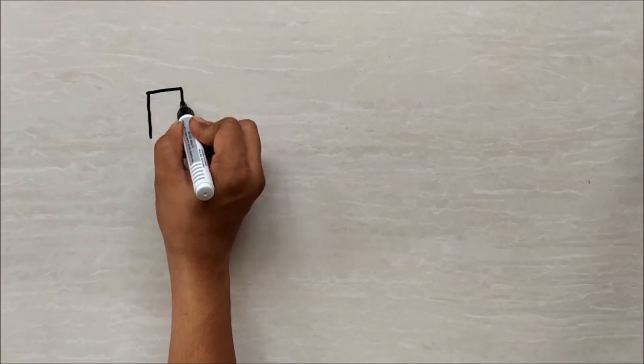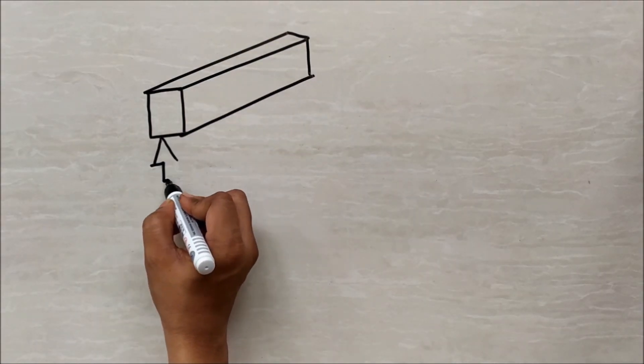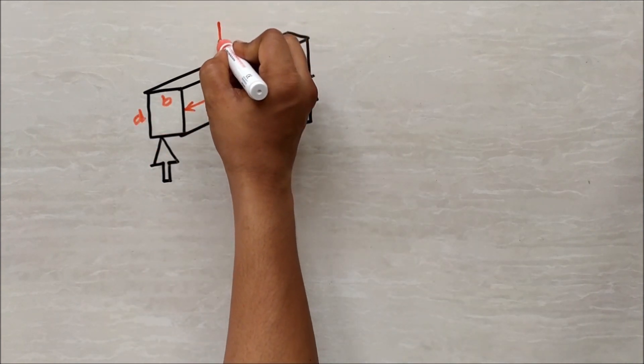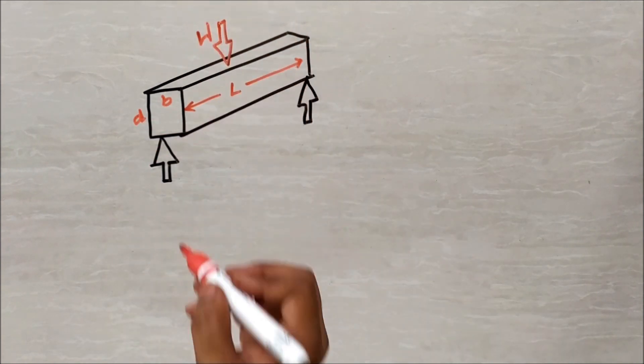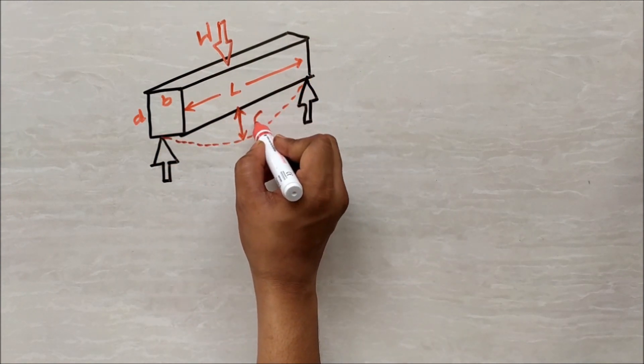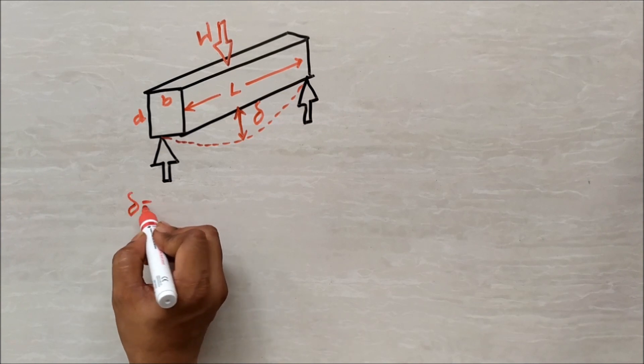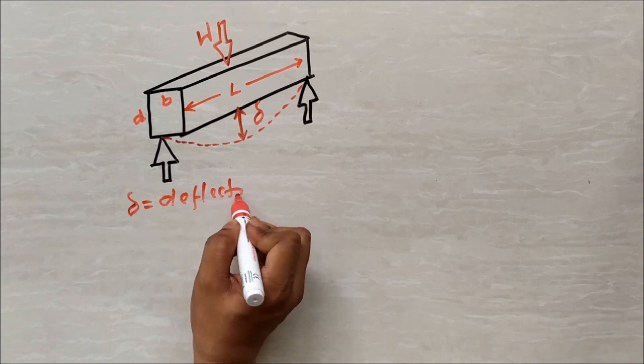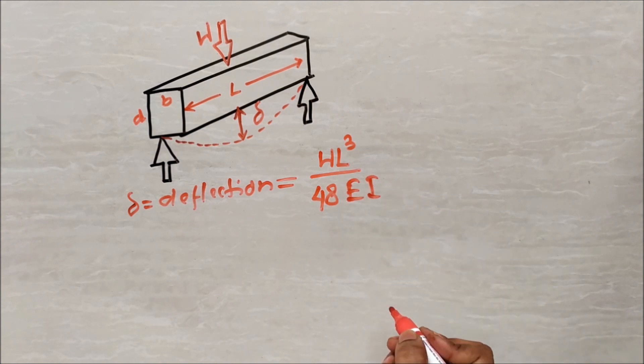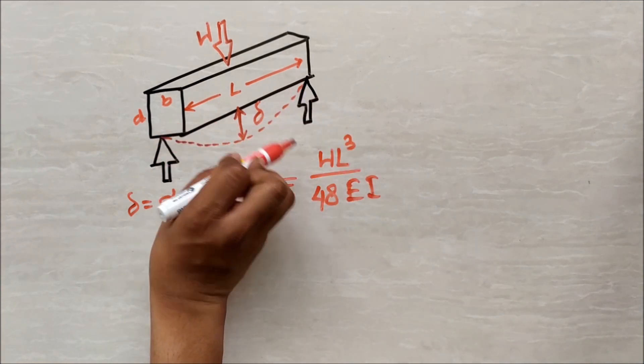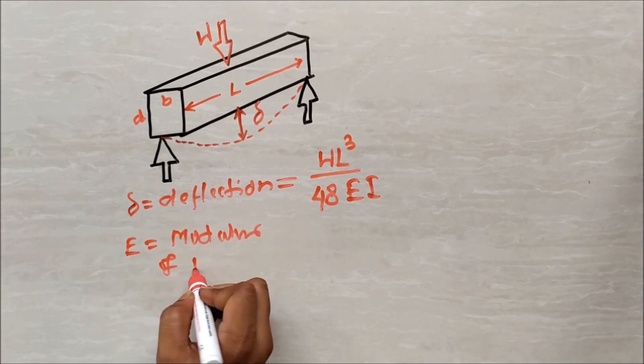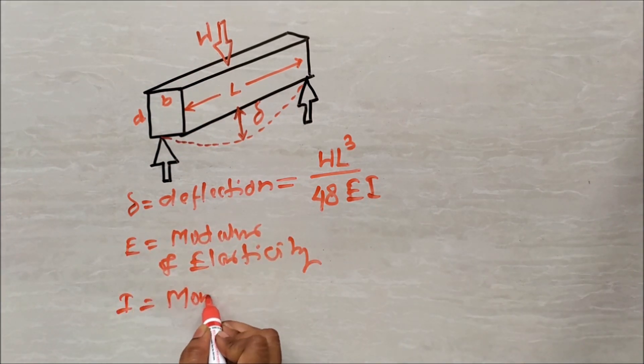Let's explain mathematically. Suppose again this is a simply supported beam, having a length L, width B and depth D. And a point load W is acting on the meat of the beam. Again the beam will bend like this. This is delta, the deflection of beam, which is the distance between the position of axis of beam before and after loading. Equals to WL cube divided by 48EI. Where L is the length of the beam, W is the point load intensity acting vertically, E is the modulus of elasticity which is a constant, and I is the moment of inertia.